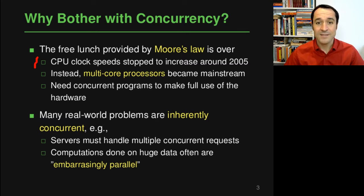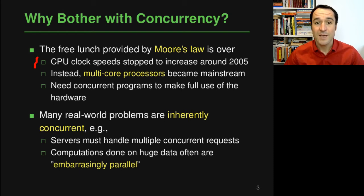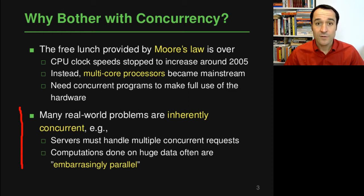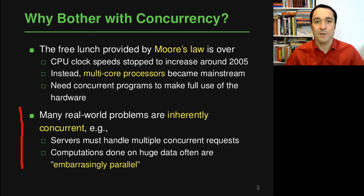Those nice times are over and instead we now have multi-core processors, which are in every laptop and even phone you can buy. To make use of these multiple cores, you basically need concurrent programs running multiple threads of execution. The other reason is that some problems in the real world are inherently concurrent — for example, a server receiving requests from different clients must handle multiple concurrent requests coming in at the same time.